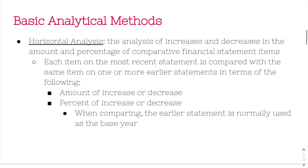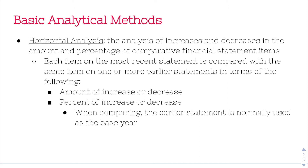Now that we know those three terms, we're going to look at some basic analytical methods. The first is horizontal analysis. Horizontal analysis is the analysis of increases and decreases in both the amount and percentage of comparative financial statement items — meaning you're looking at the same item over time. For example, the increase in revenue from 2019 to 2020. Each item on the most recent statement is compared with the same item on one or more earlier statements, looking at both the dollar amount and percent increase or decrease. The earlier statement is used as the base year.